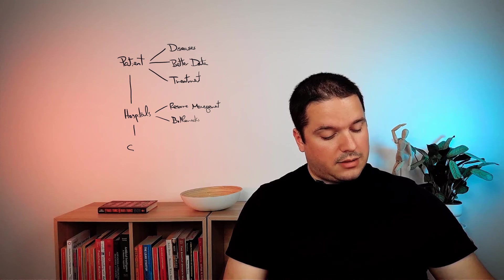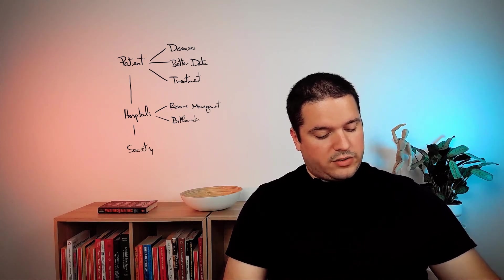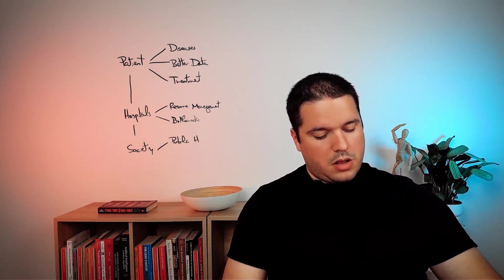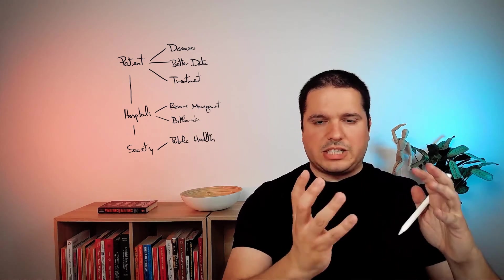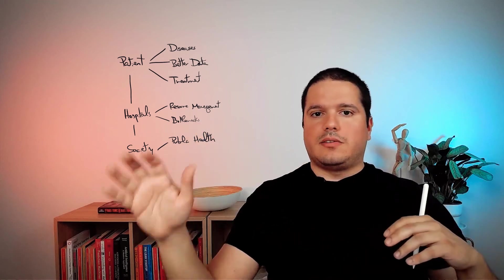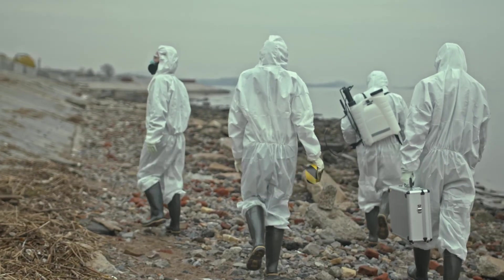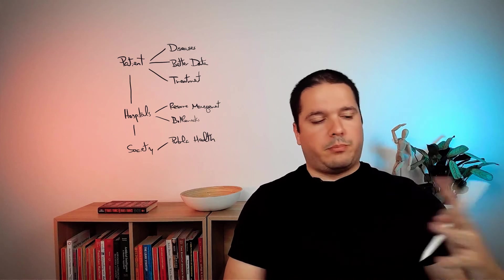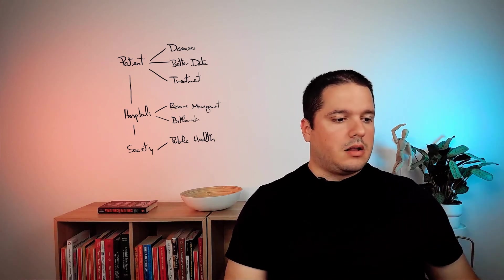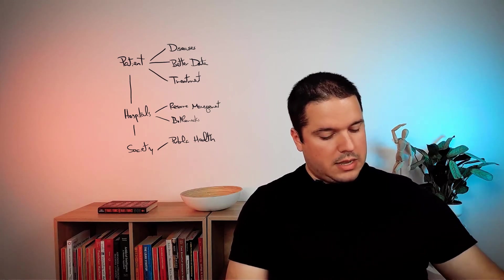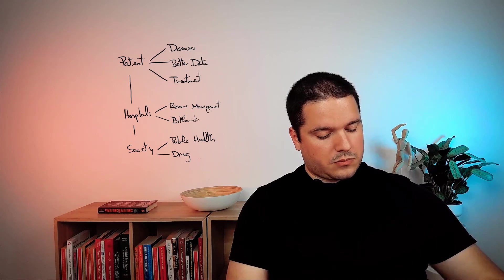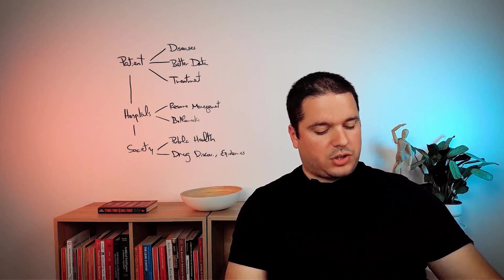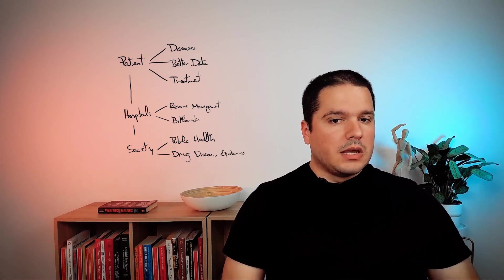And the third level is society. What is society? It's everything around public health. And what is public health? Basically identifying issues not at the patient level, but at the macro level. So trends on the flu, forecasting trends on the flu, epidemics, discovering drugs, which is more linked to pharma than to healthcare, to the actual process of providing healthcare. But it's also relevant here. So everything that is at a macro level, drug discovery, epidemics, etc., it's a potential application of AI to healthcare.